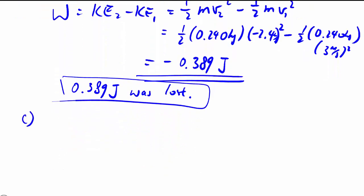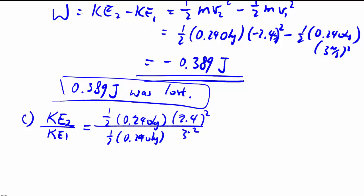For part C, very similar. They want the percentage that is left. So they want the final divided by the original instead, because sometimes that's more useful to talk about. So we have one half times 0.240 kg - in fact, that can just cancel out top and bottom. And we find that it's 0.64 or so, which is equal to 64%. We were able to keep 64% of the energy.